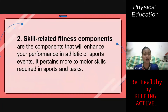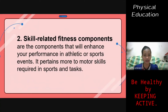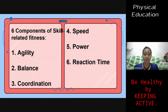Now let's talk about skill-related fitness components. These are the components that enhance your performance in athletic or sports events, pertaining more to motor skills required in sports and tasks. We have six components of skill-related fitness: agility, balance, coordination, speed, power, and reaction time.